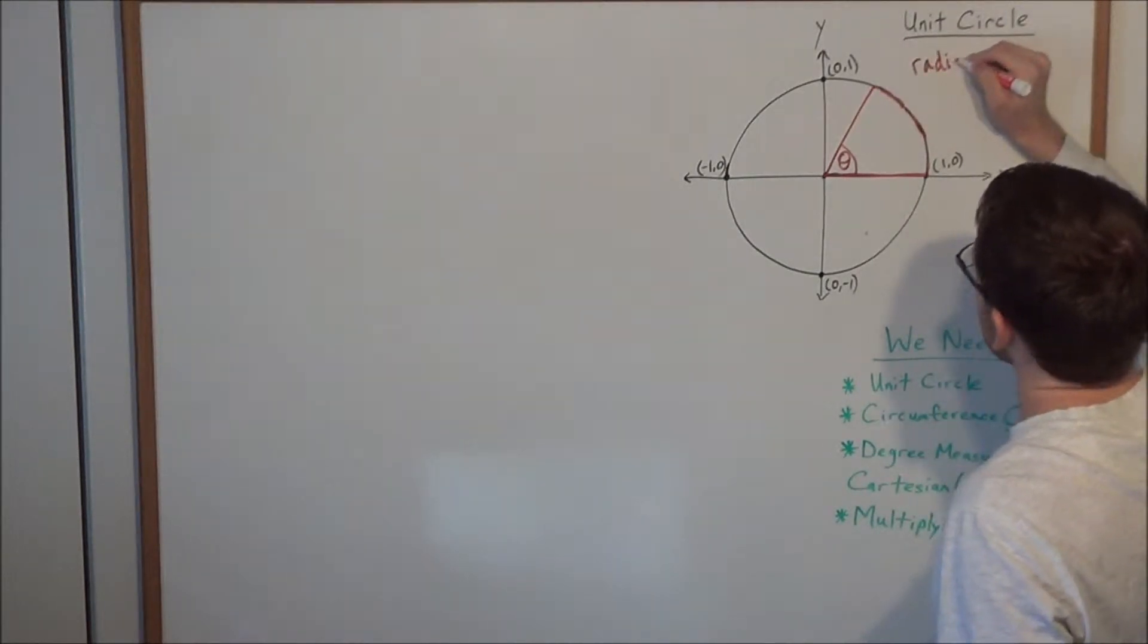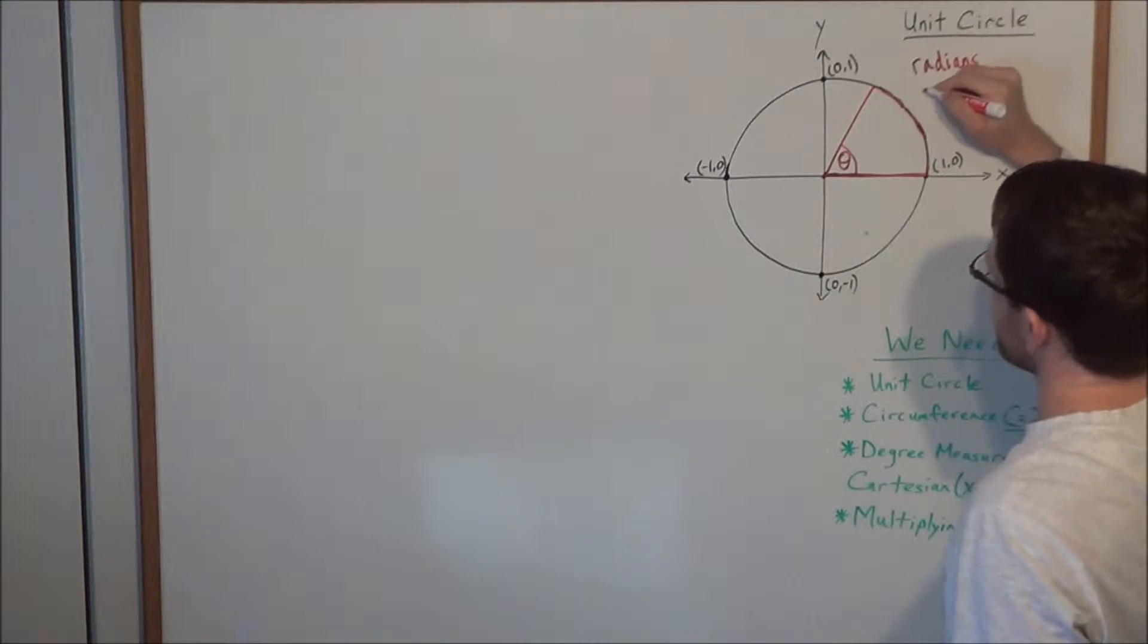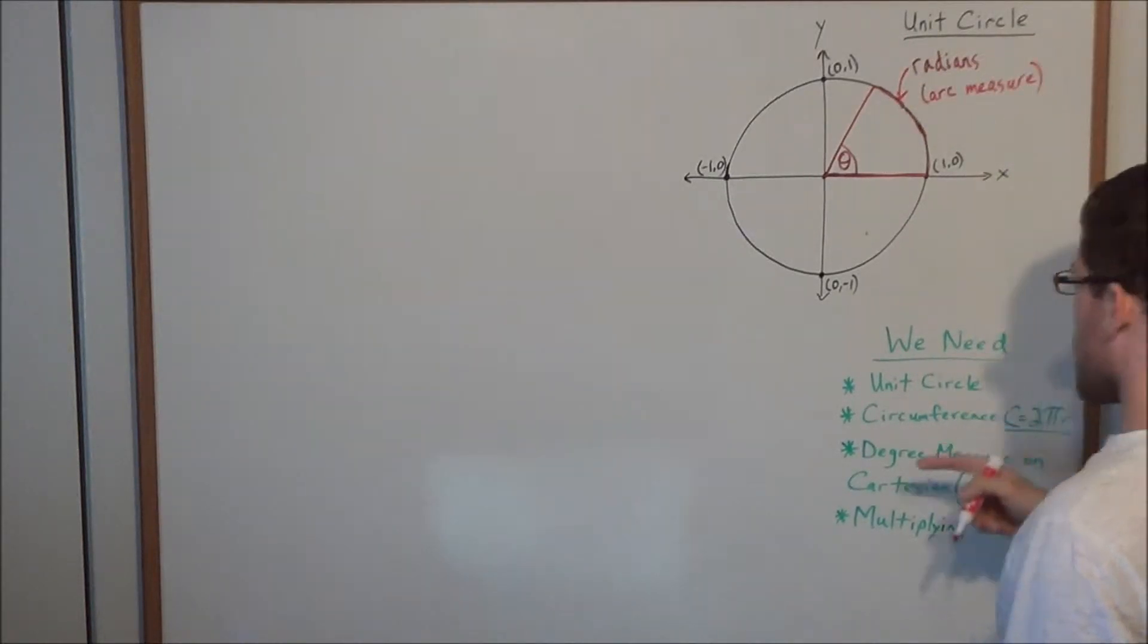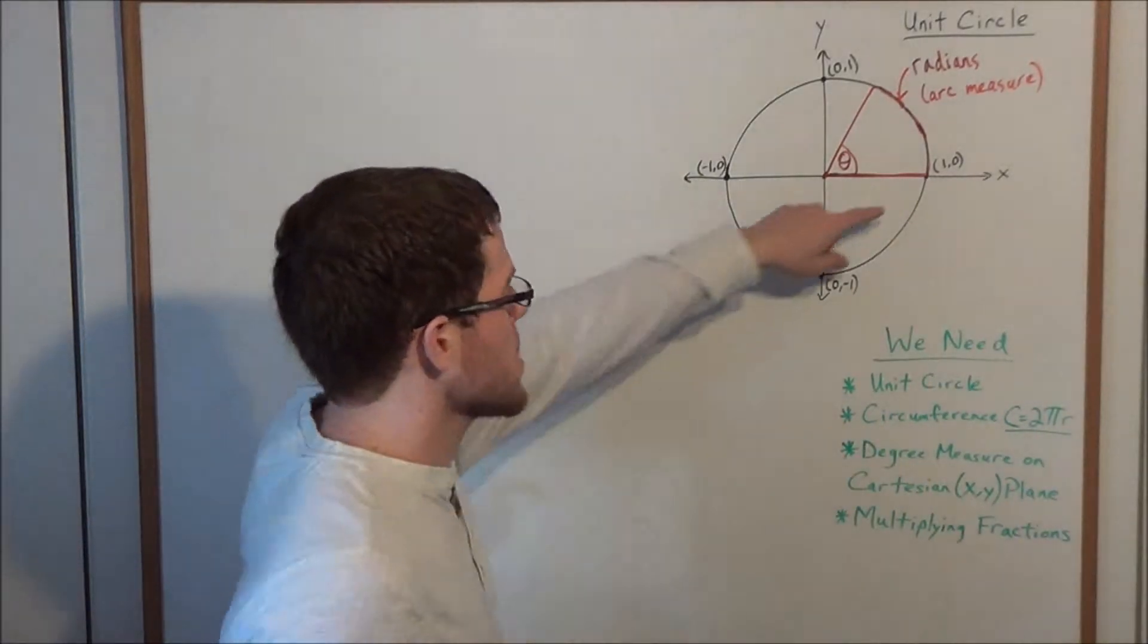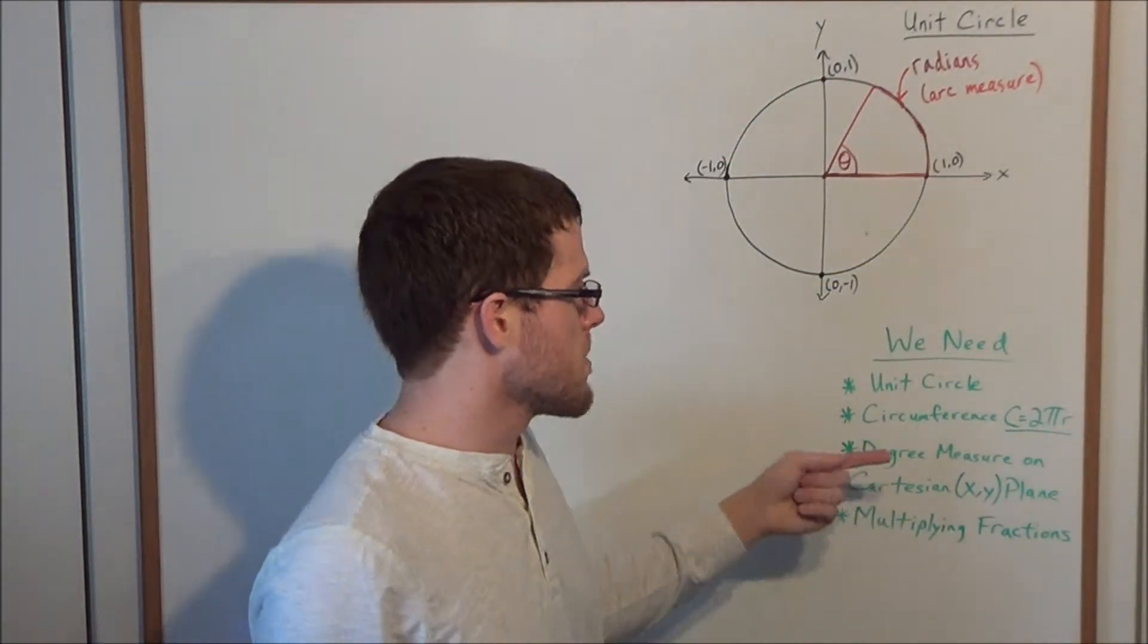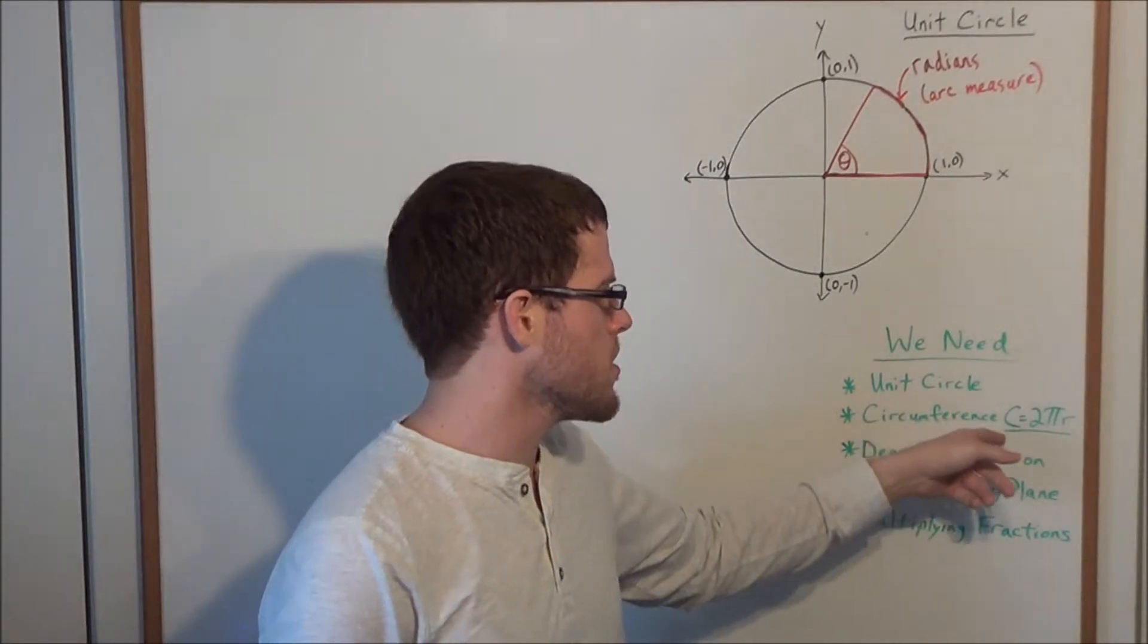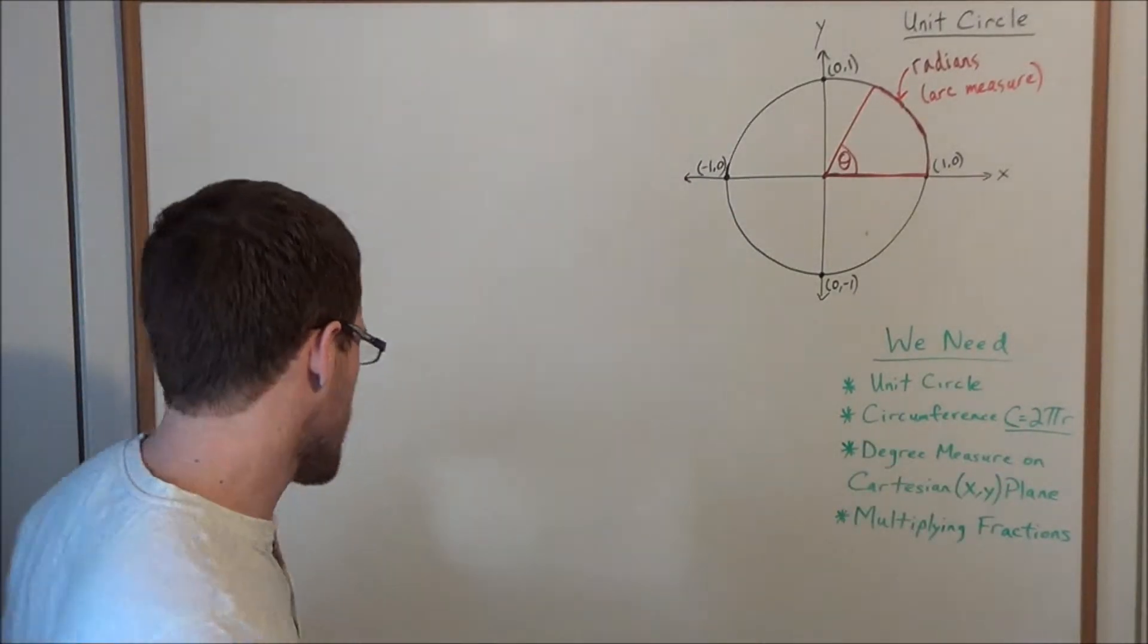So I'll write it up here. We have that radians refers to the arc measure. But keep in mind, what is the arc measure of a circle? Well, the arc measure, the entire arc of the circle, would be the circumference of the circle. So to understand radians, it's important that we have this equation for circumference.